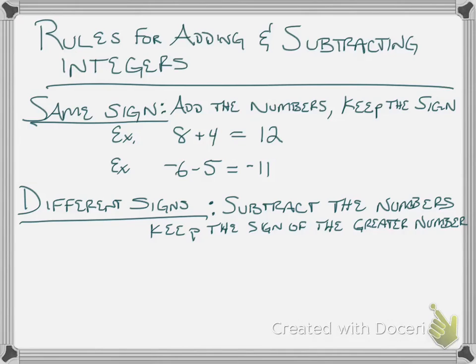When they're different signs, you're going to subtract the numbers and keep the sign of the greater number. For example, negative 6 plus 9. This means a negative 6 and a positive 9. You're combining, so you subtract the numbers. 9 minus 6 is 3. Keep the sign of the greater number, which means this is going to stay a positive.